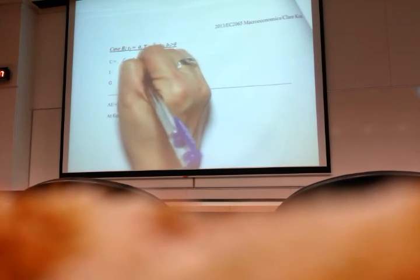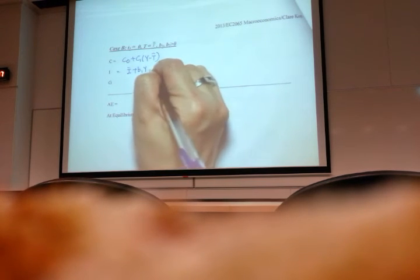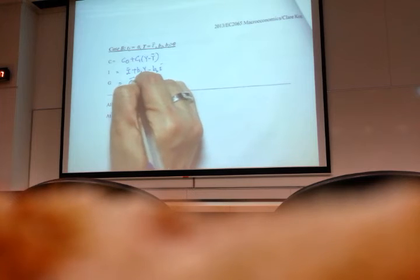Right, so with these characteristics, again, we write out all our function. So this is your consumption function, investment. So now there is a B1, then a B2I, and your government spending function.